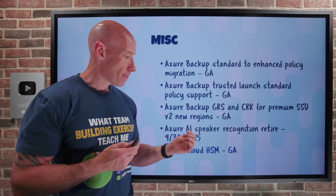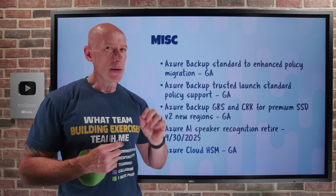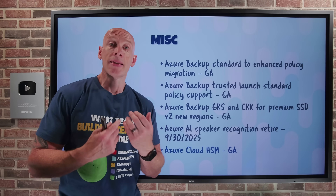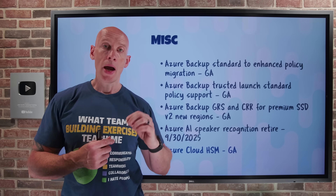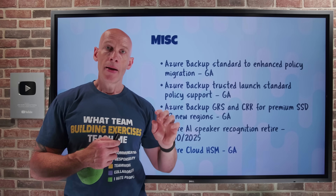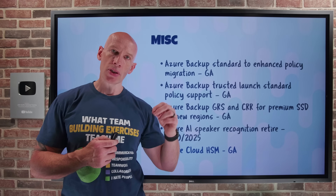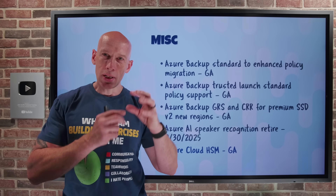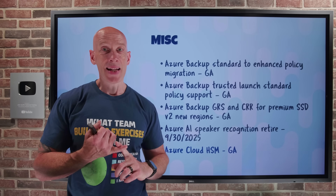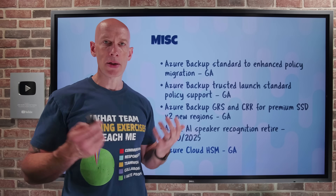Azure Cloud HSM has gone GA. This is the highest level FIPS 140-3 Level 3 single-tenant Hardware Security Module service, meeting the most stringent security compliance needs. As a customer, I get full administrative control of my own HSM cluster, which is made up of three HSM partitions, and all of the keys and policies are automatically synchronized. This is the replacement for the previous Azure Dedicated HSM offering. Anywhere I have the most sensitive applications and workloads needing cryptographic-based isolation security — if I need PKCS 11, if I'm migrating from Azure Dedicated HSM, or migrating from AWS Cloud HSM — this is the solution.